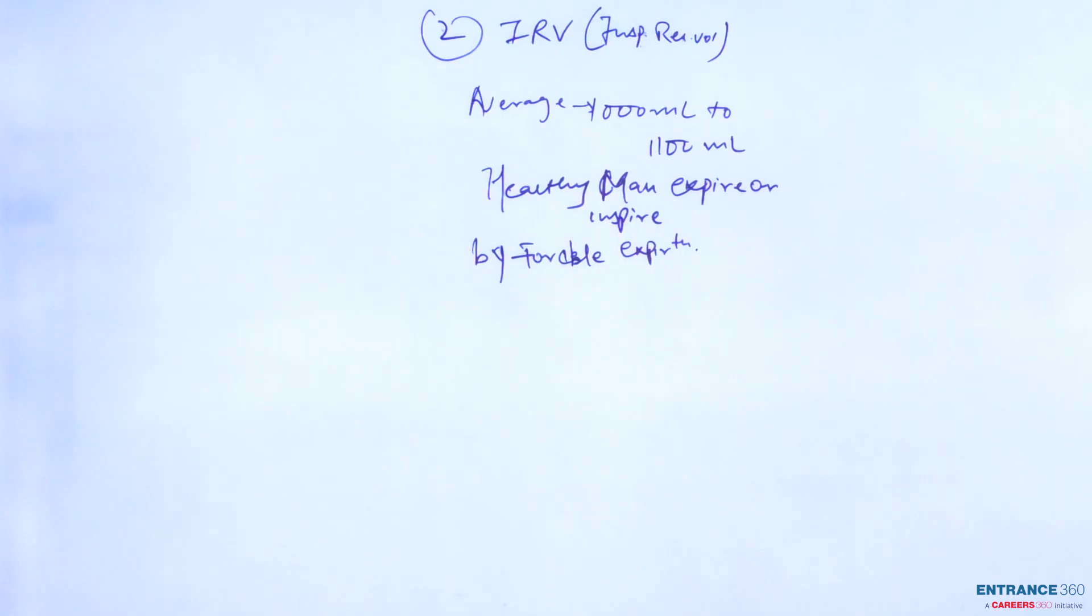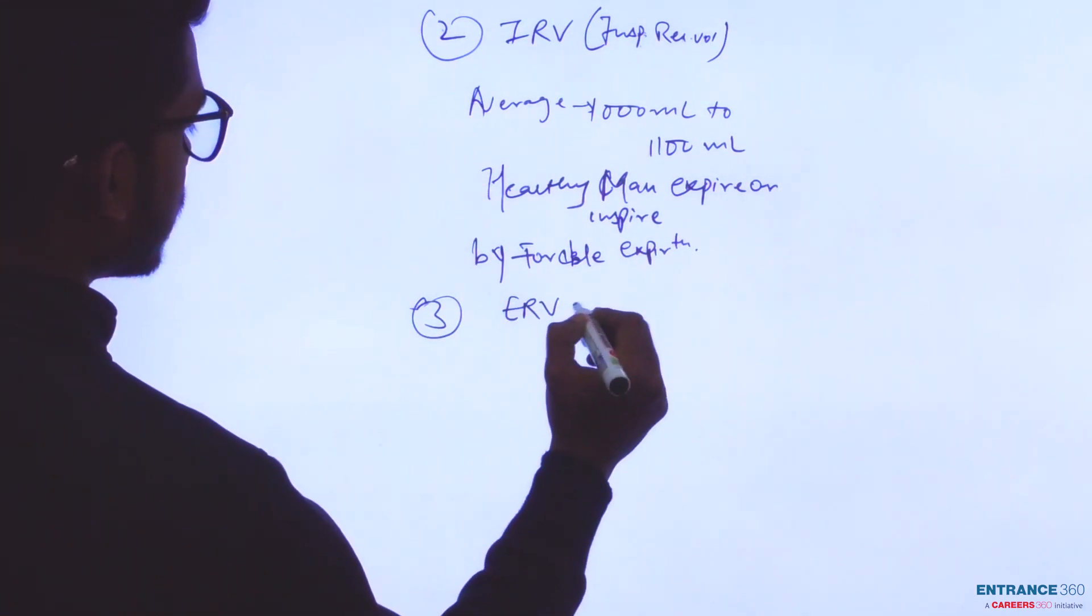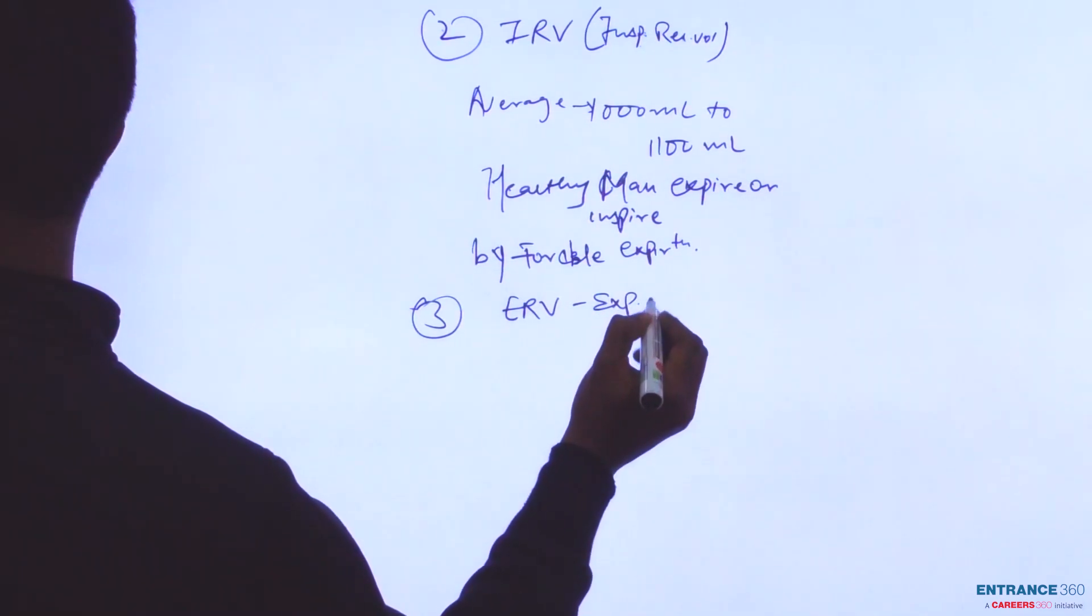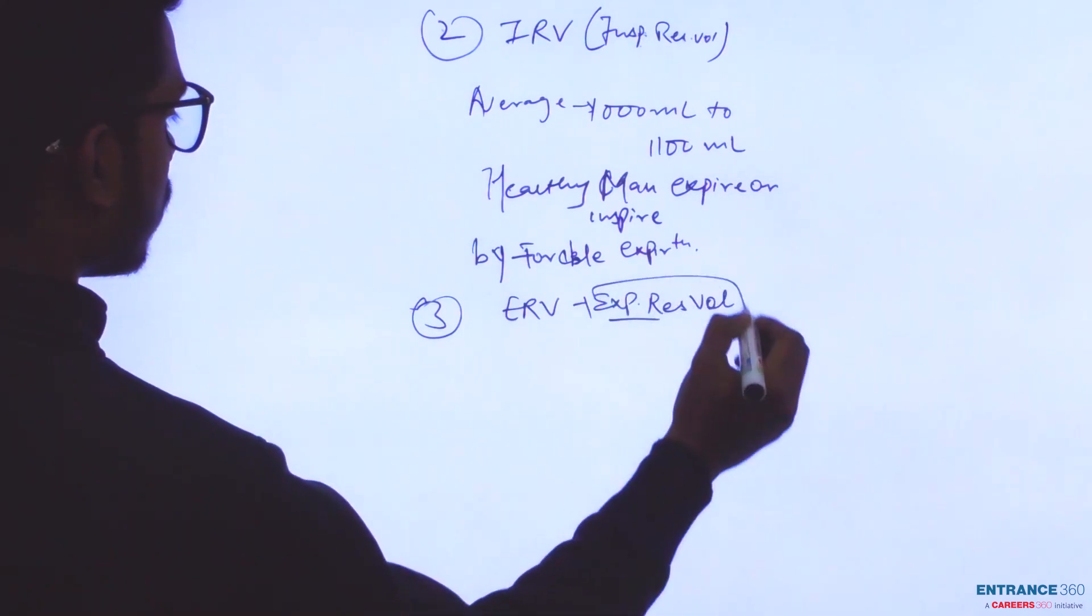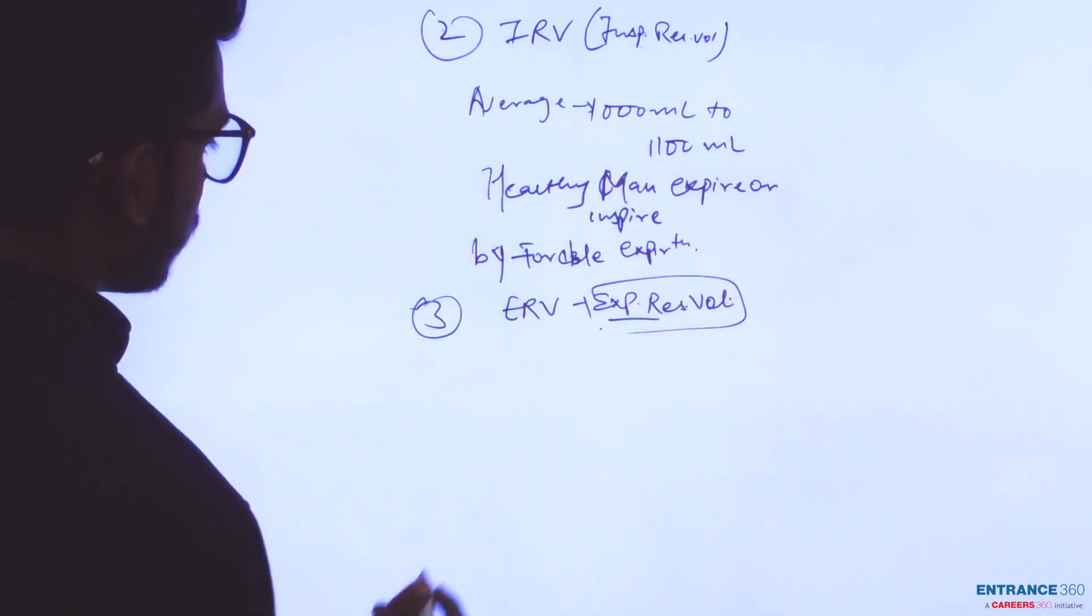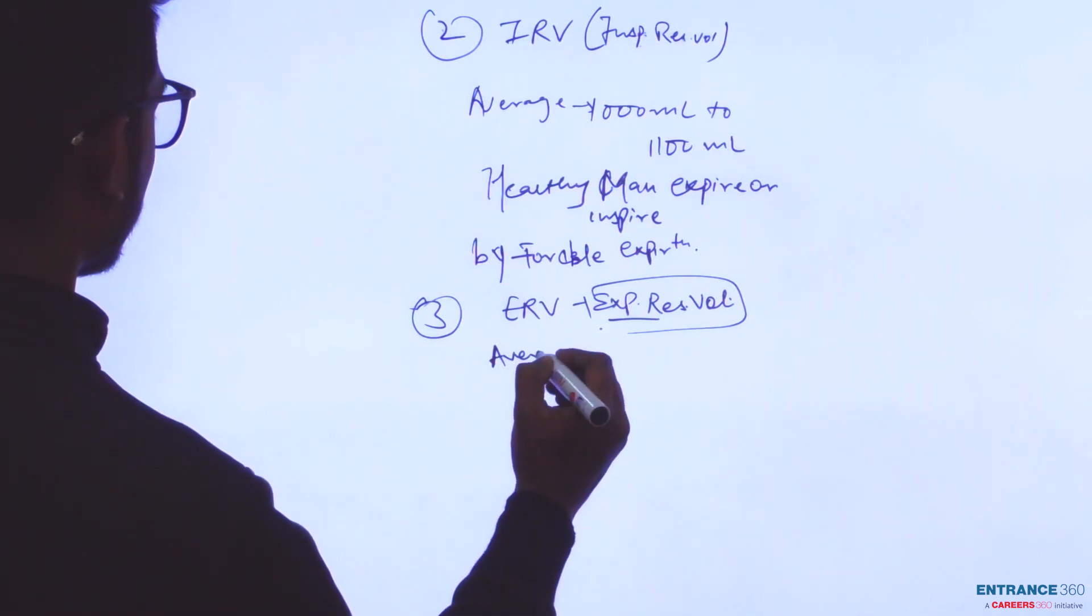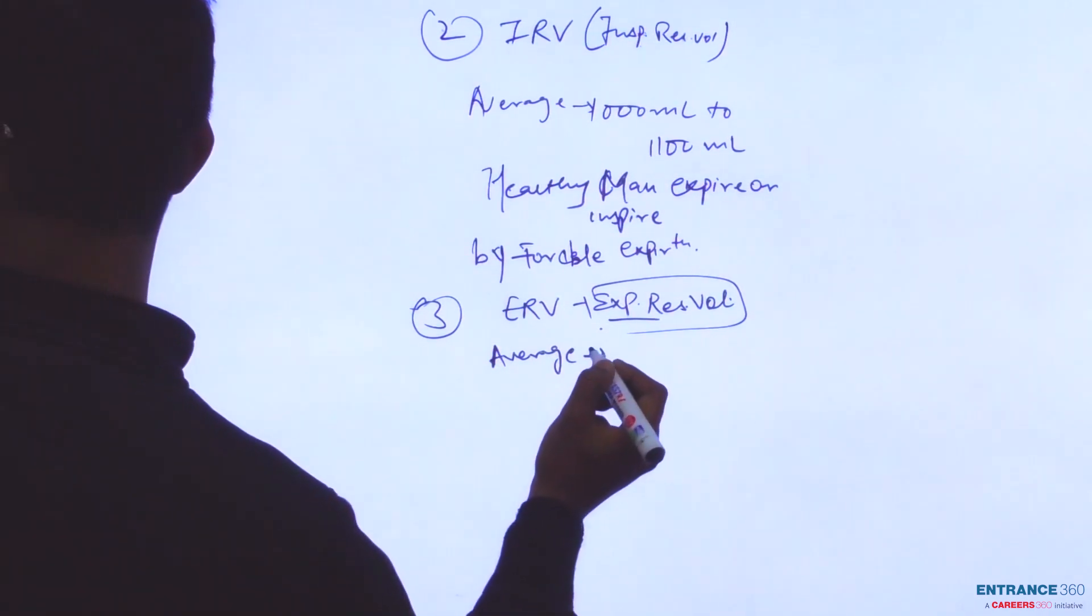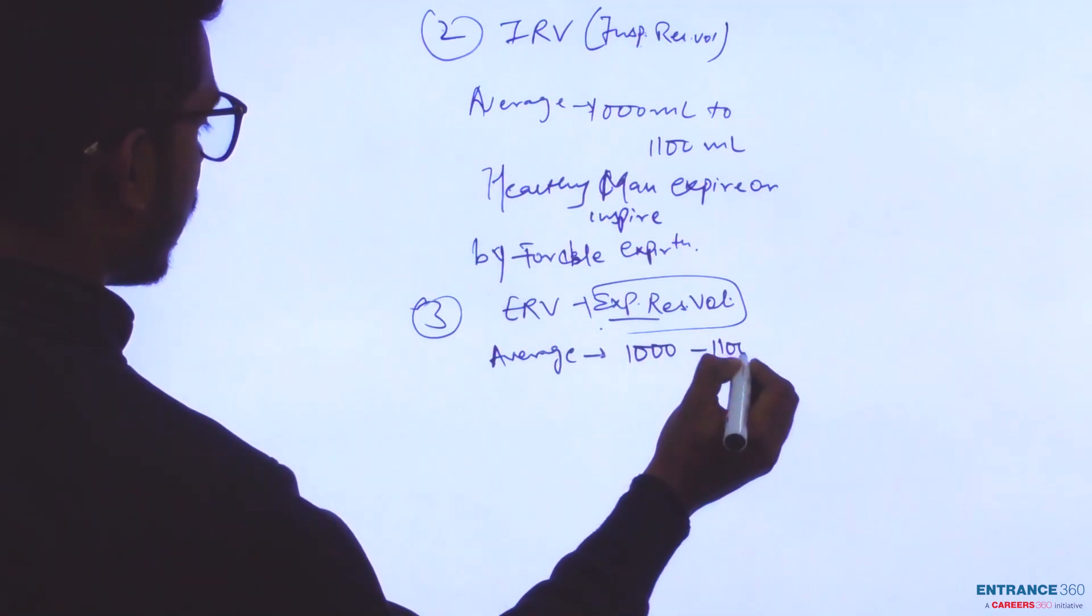The third one is ERV, Expiratory Reserve Volume. The average amount of air we can expire is around 1000 to 1100 ml.